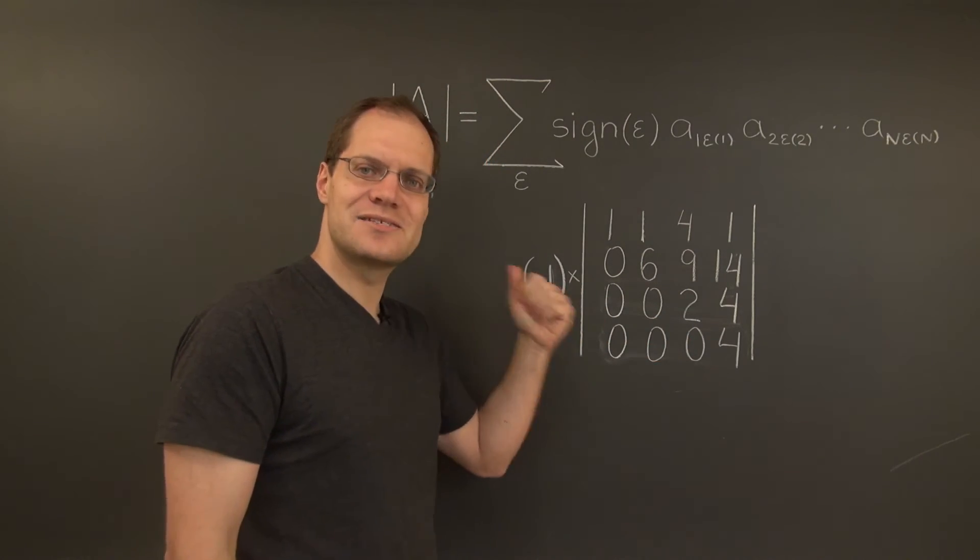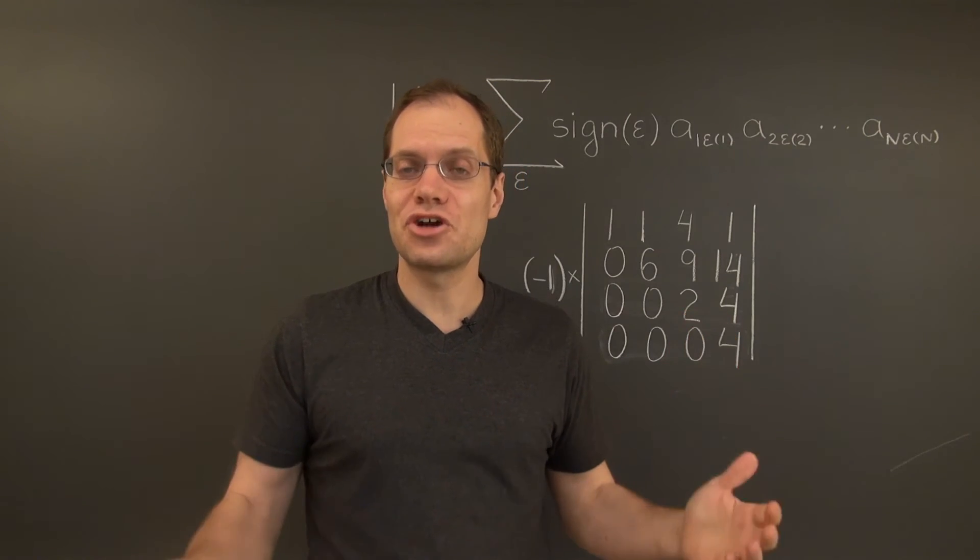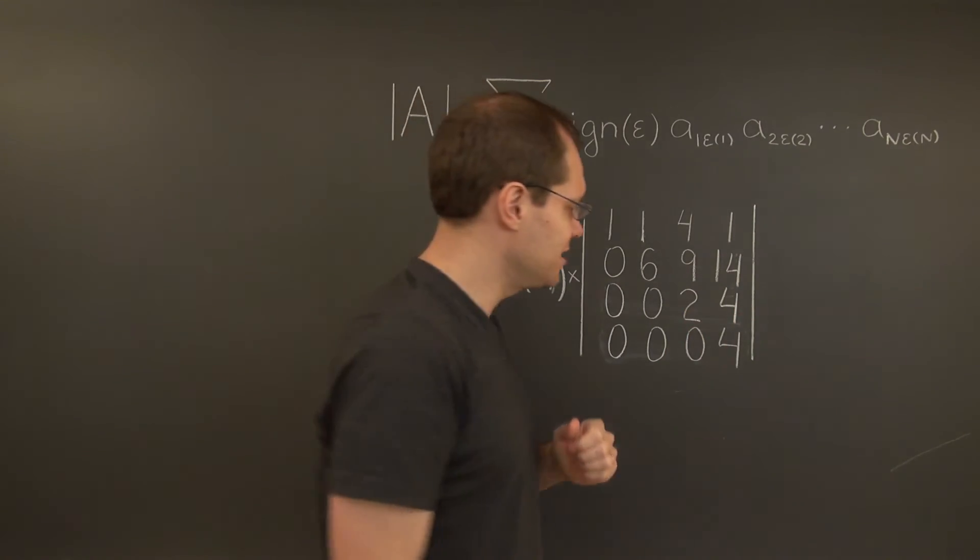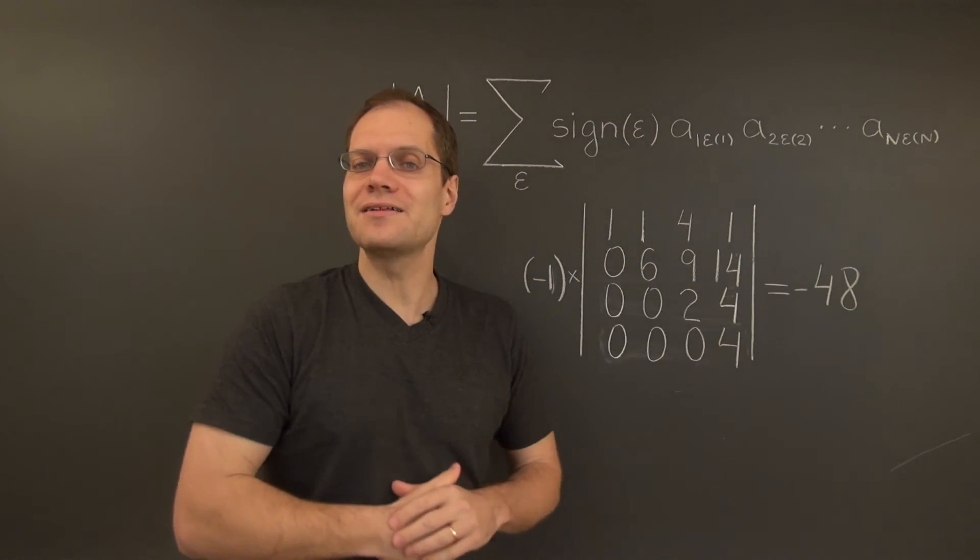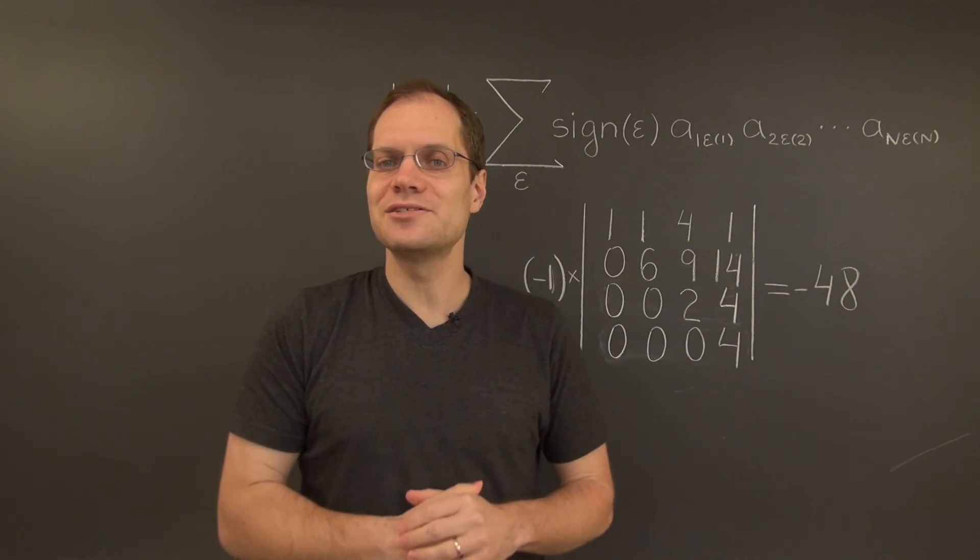With this minus 1, it's minus 48. So the determinant of the original matrix is minus 48. And we're done with yet another example of calculating a determinant by Gaussian elimination.